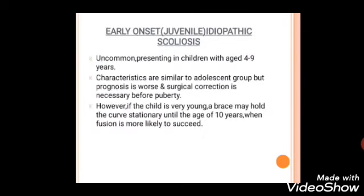The second type of idiopathic scoliosis after late onset is early onset juvenile idiopathic scoliosis, presenting in children aged 4 to 9 years. Characteristics are similar to the adult group but prognosis is worse and surgical correction is necessary before puberty. If the child is very young, a brace may hold the curve stationary until the age of 10 years, when fusion is more likely to succeed.